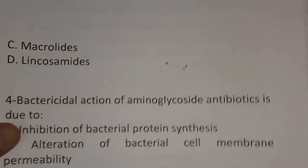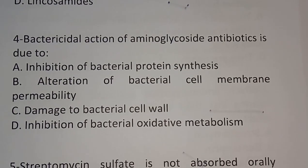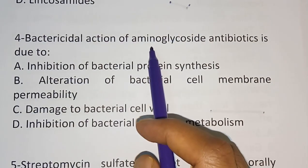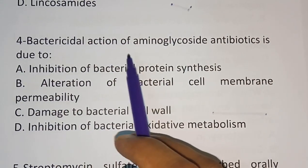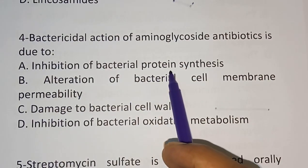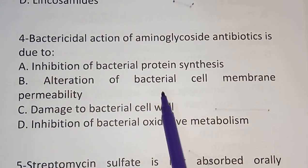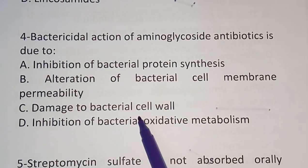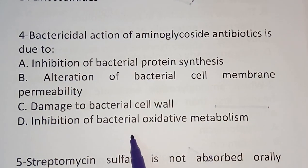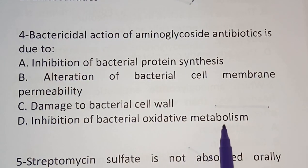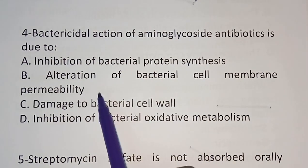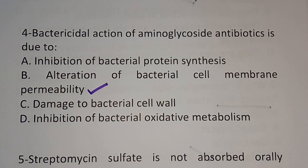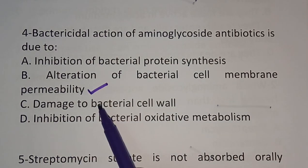Question 4: The bactericidal action of Aminoglycoside antibiotics is due to? Option A: Inhibition of bacterial protein synthesis. Option B: Alteration of bacterial cell membrane permeability. Option C: Damage to bacterial cell wall. Option D: Inhibition of bacterial oxidative metabolism. The correct answer is Option B — alteration of bacterial cell membrane permeability.